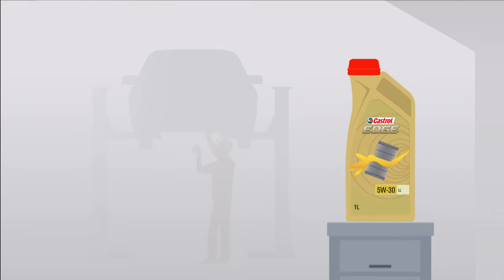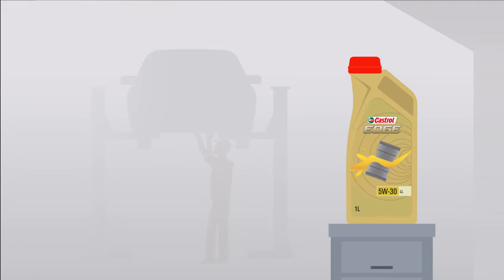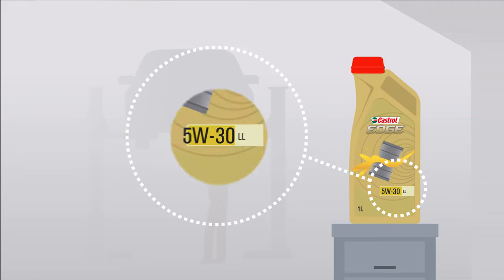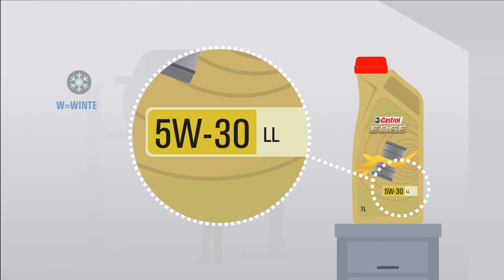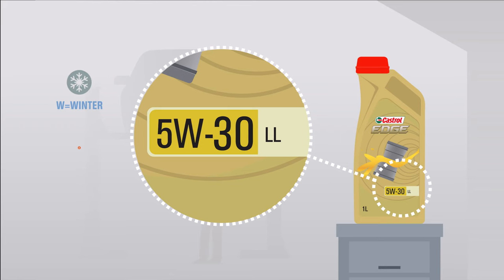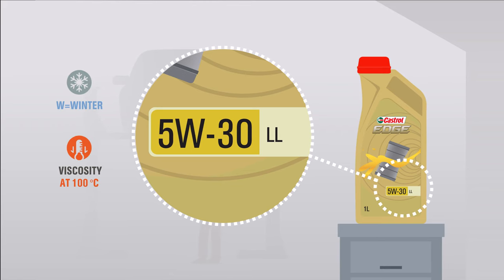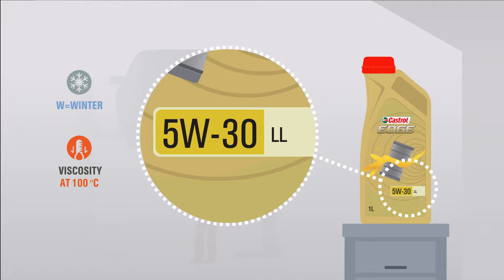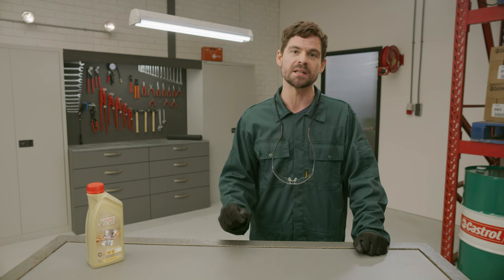It's quite simple actually. The number before the W, which stands for winter, indicates the viscosity at low temperature — for example, before you start your engine. The number right after the W stands for viscosity at 100 degrees Celsius, which is near the normal operating temperature of your engine.